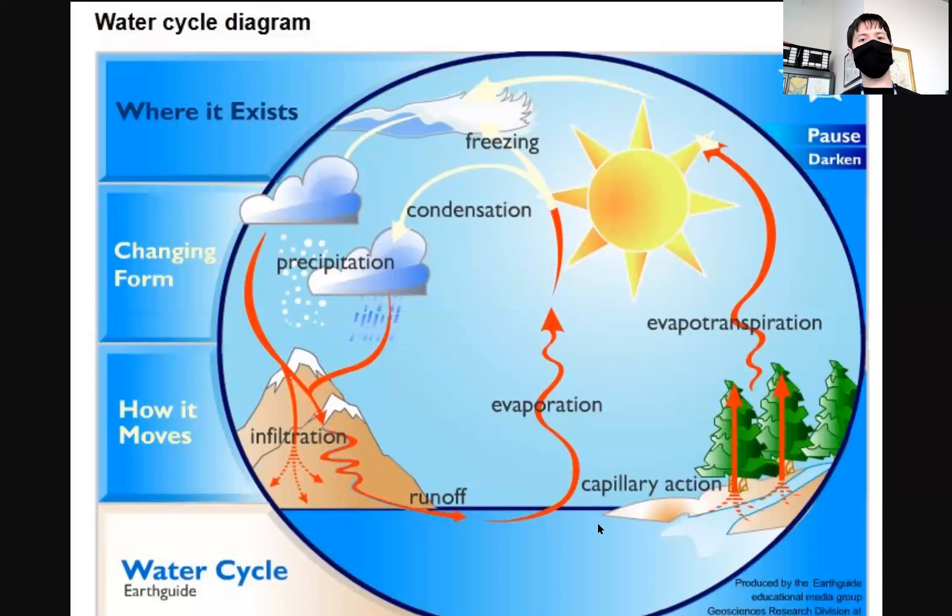When I talk about the water cycle, I could start by talking about any step because it's called a cycle, so it comes back around. But I'm just going to start with the ocean or maybe this is a river, because it just seems like the natural place for me to start. Here we have an ocean or a lake or something.